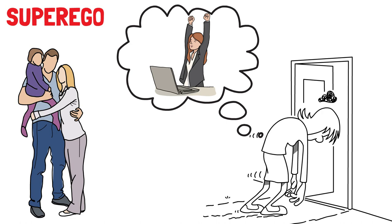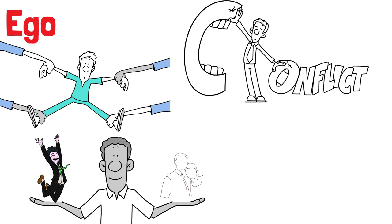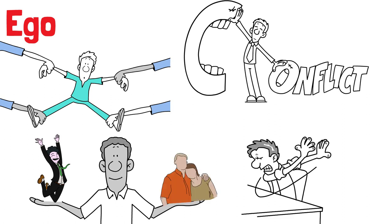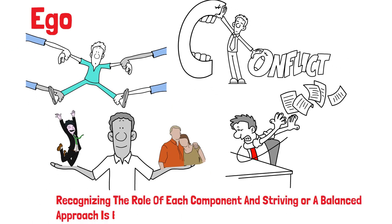If your ego struggles to mediate between the id and superego, you may experience ongoing conflict and stress. Balancing career and family becomes challenging, leading to anxiety and feelings of being torn between competing demands. Recognizing the role of each component and striving for a balanced approach is essential in making informed decisions in any scenario.